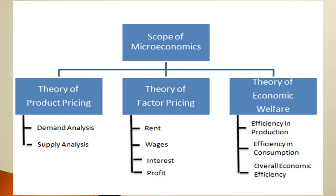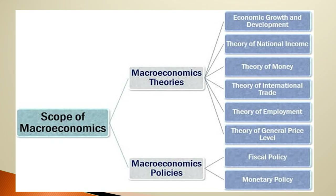The scope of economics covers: Theory of Product Pricing — demand and supply study; Theory of Factor Pricing — rent, wages, interest, and profit; and Theory of Economic Welfare — production, consumption, and economic efficiency. The scope of macroeconomics covers economic growth and development, national income, money, international trade, employment, general price level, fiscal policy, and monetary policy.